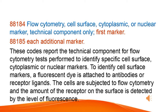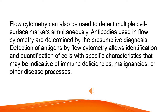Flow cytometry, cell surface, cytoplasmic, or nuclear marker, technical component only, first marker. Each additional marker. These codes report the technical component for flow cytometry tests performed to identify specific cell surface, cytoplasmic, or nuclear markers. To identify cell surface markers, a fluorescent dye is attached to antibodies or receptor ligands. The cells are subjected to flow cytometry and the amount of the receptor on the surface is detected by the level of fluorescence. Flow cytometry can also be used to detect multiple cell surface markers simultaneously. Antibodies used in flow cytometry are determined by the presumptive diagnosis. Detection of antigens by flow cytometry allows identification and quantification of cells with specific characteristics that may be indicative of immune deficiencies, malignancies, or other disease processes.